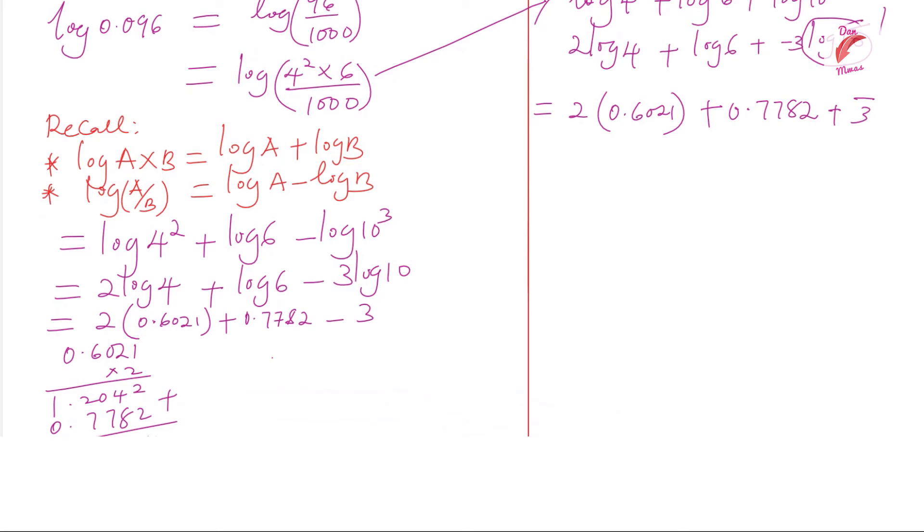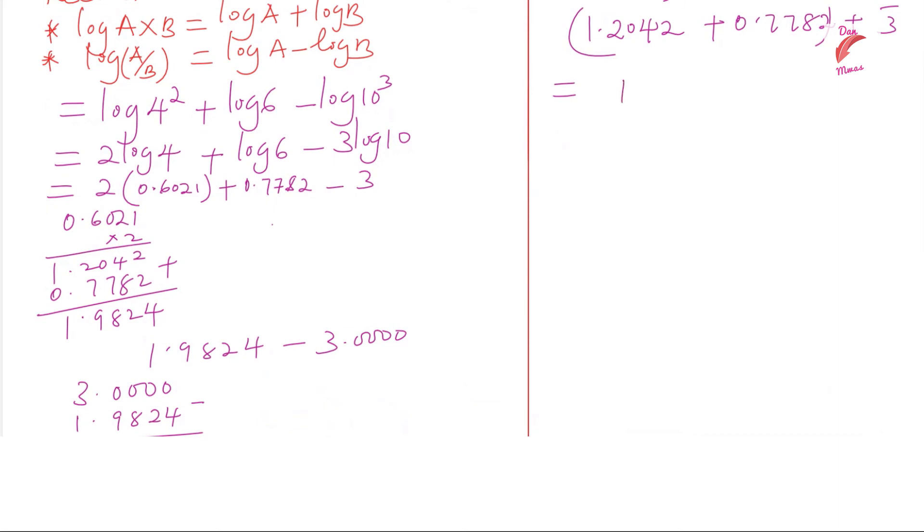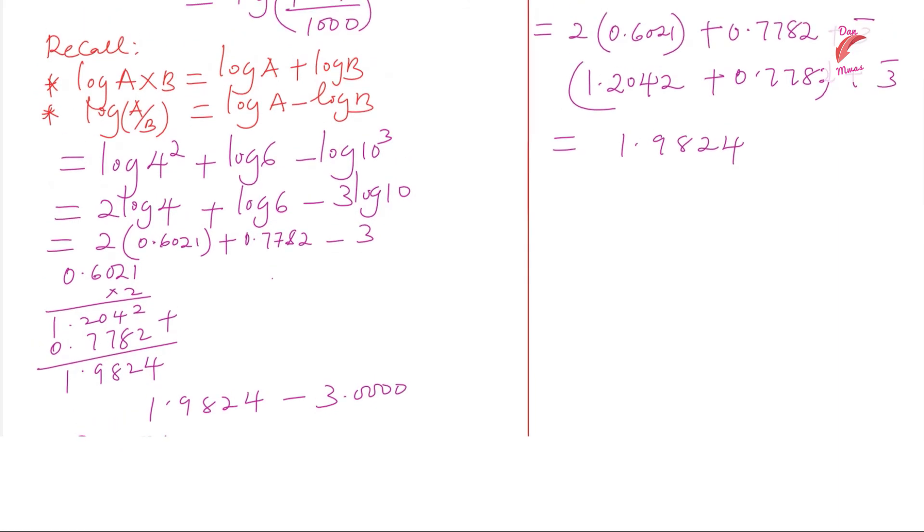We got this one as 1.2042, then we add 0.7782, then plus bar 3. We obtained the solution as 1.9824. This is the characteristic we are going to add here. This will give 1 plus bar 3, which will give bar 2.9824.